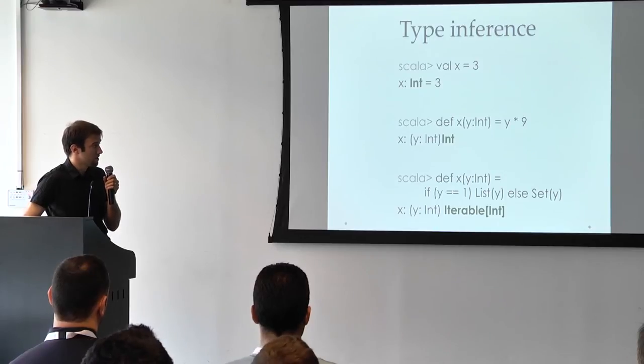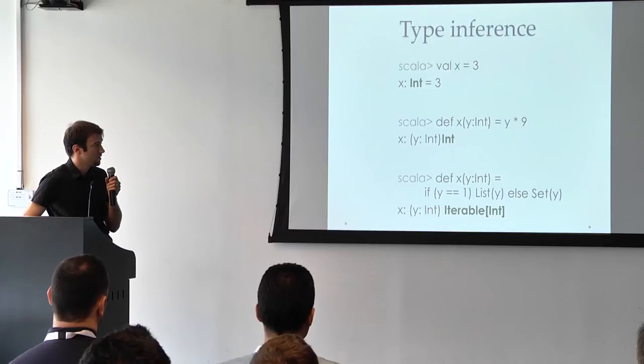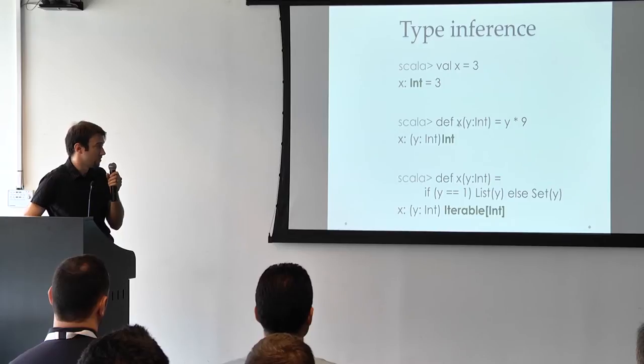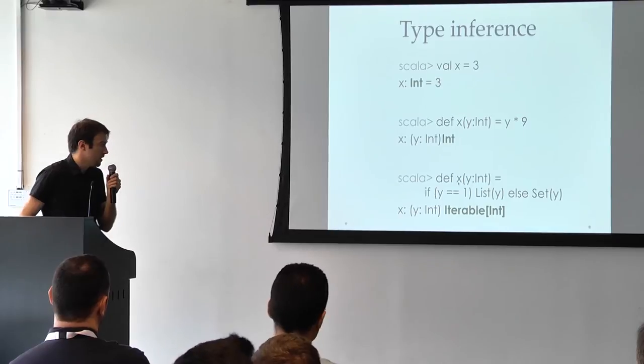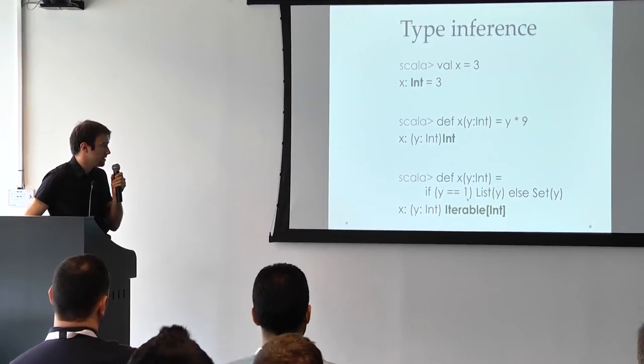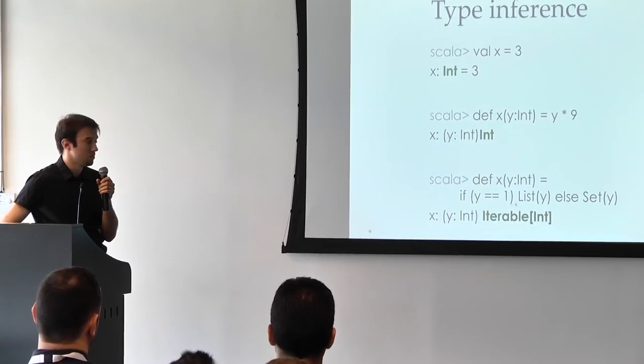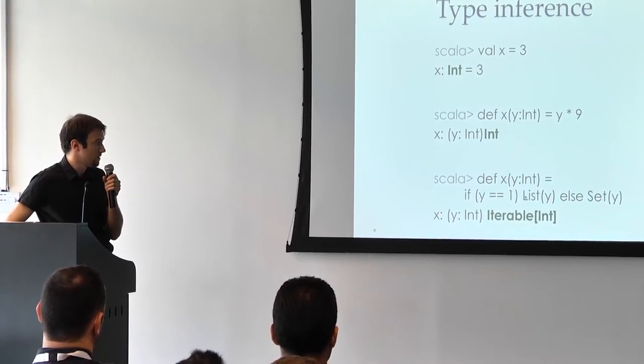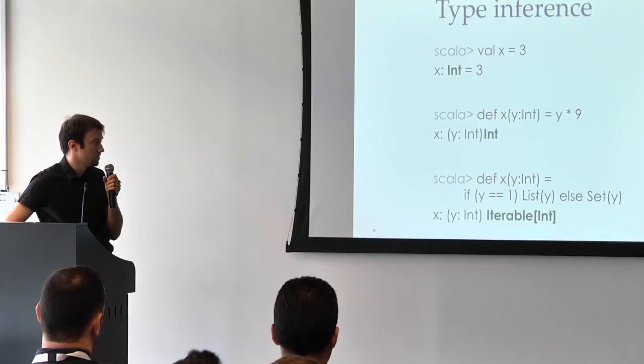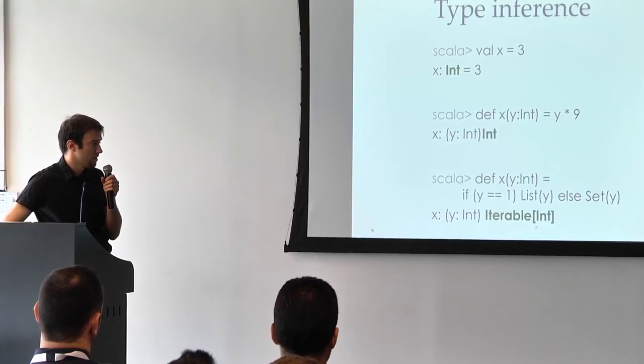Same for functions. In this case, since the compiler knows that y is an int, it will infer that the signature of this function, the return type of this function, is an integer as well. And the other example, the last example, shows us the least upper bound inference of the type. In this case, we see that the least upper bound of a list and a set is an iterable.